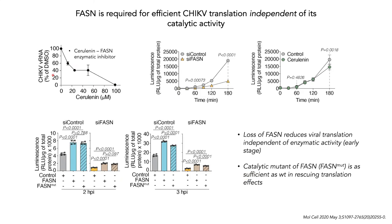Previous work had shown that inhibiting fatty acid synthase lipid biosynthesis using cerulenin reduces ChikV replication. To better understand whether FASN binding to viral RNA played an additional proviral role, we introduced a NanoLuciferase reporter within the ChikV genome to measure translational output of incoming viral RNA. We found that FASN knockdown led to a significant decrease in viral translational output within one hour of infection, which was not observed when enzymatic activity was inhibited by cerulenin — whose effects are only seen starting at three hours. In a rescue experiment, the catalytic dead FASN was as sufficient as wild-type in rescuing translational effects at early time points, but by the third hour, the catalytic mutant was significantly less able to increase viral translation compared to wild-type FASN.